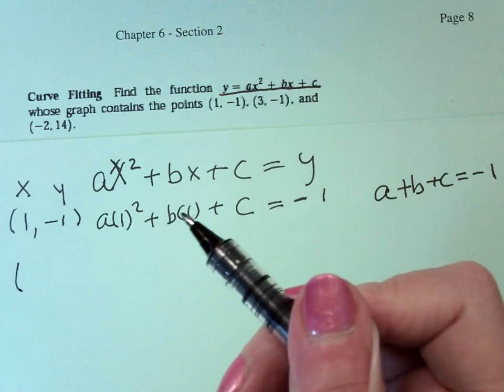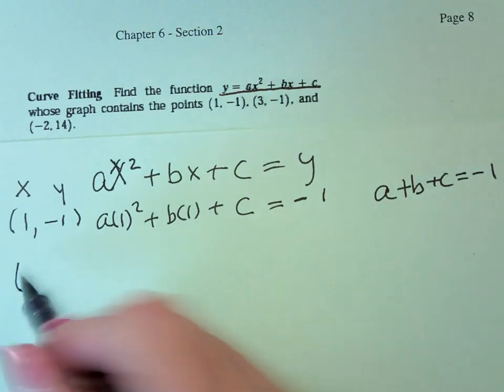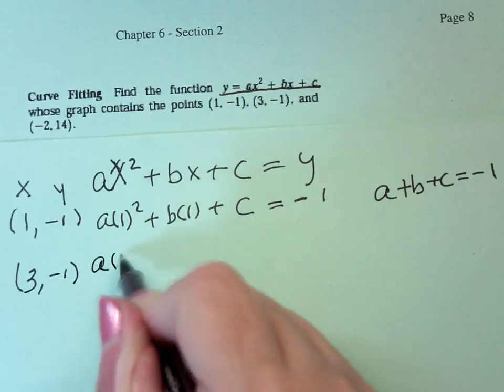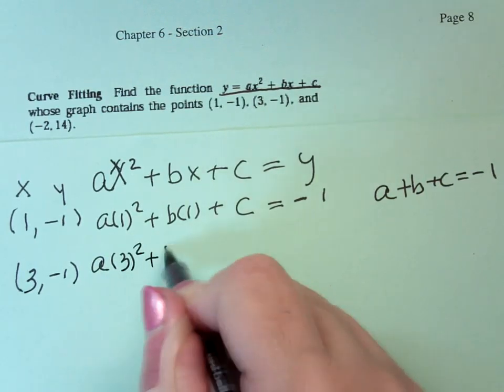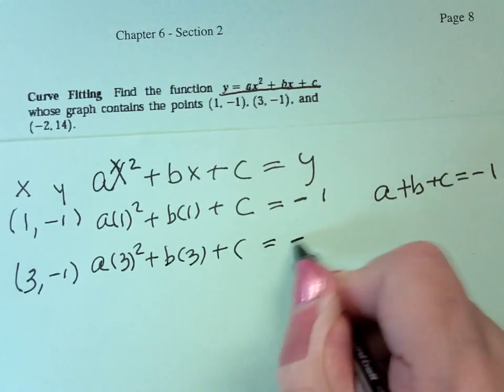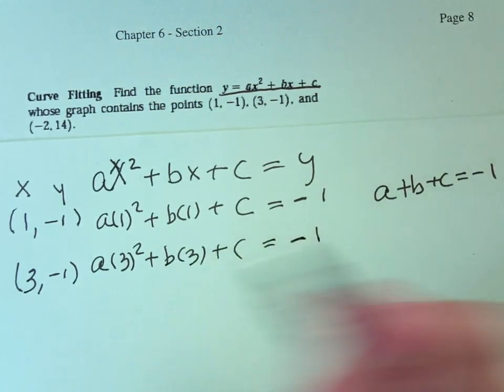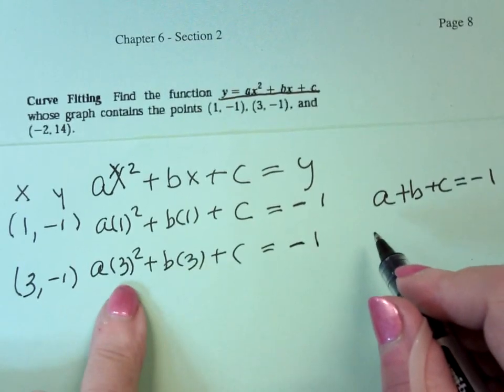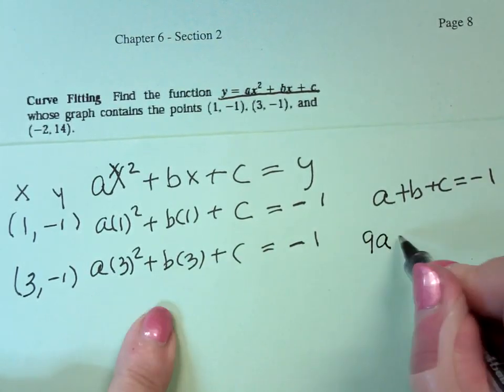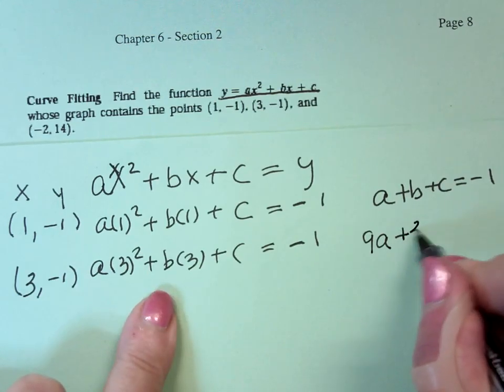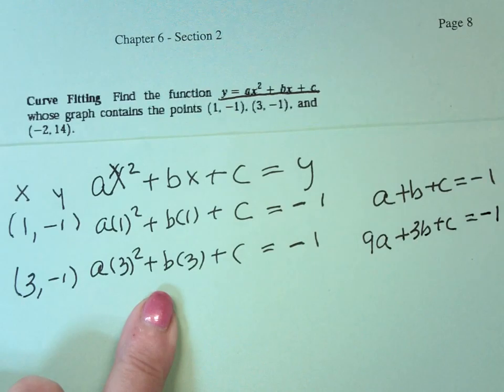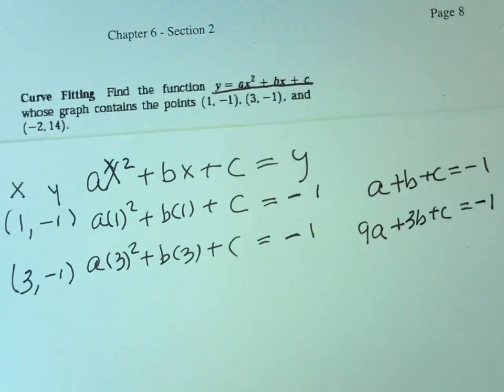I have a second coordinate point, which is going to be 3, negative 1. This says that a times 3 squared plus b times 3 plus c equals negative 1. This gives me 3 squared is 9, so 9a plus 3b plus c equals negative 1. So in other words, I'm forming a system of three equations and three unknowns.